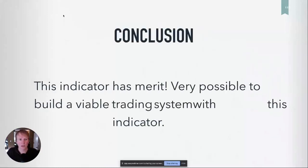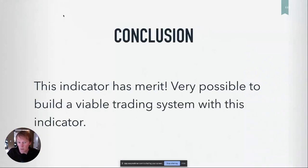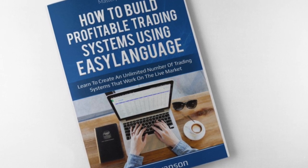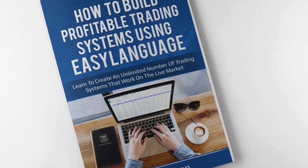My conclusion is this indicator has merit. It's very possible to build a viable trading system with this indicator, in my opinion. Where do you get started in algorithmic trading? I personally use EasyLanguage — it's a computer language for traders and it's a great place to start. I wrote this ebook specifically to help people get started using EasyLanguage, and it also comes with four training videos on getting started. If you want to learn to become an algorithmic trader, download those four videos, get your free ebook, and hit that like button and subscribe to this channel. We're all about helping you become a successful algorithmic trader.